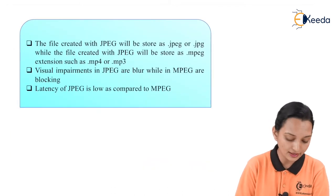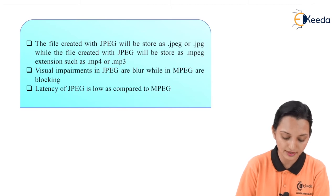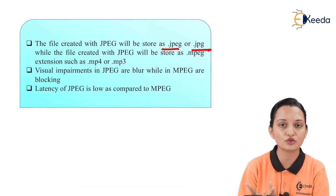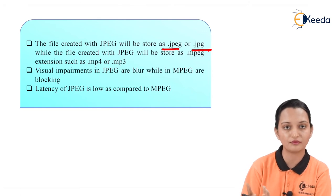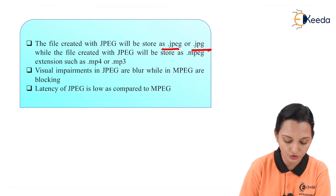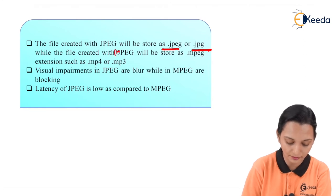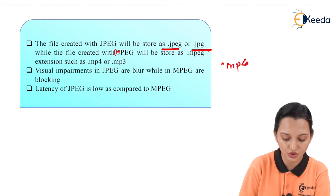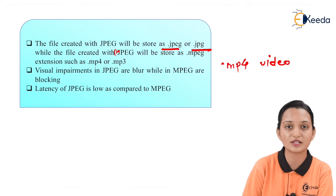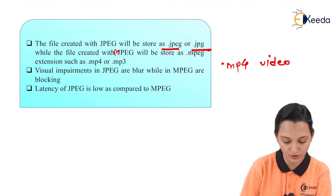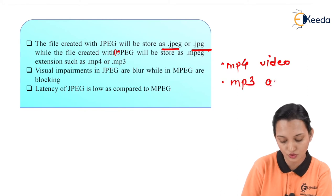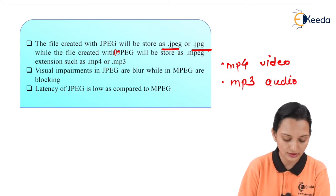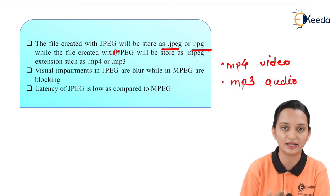Files created with JPEG are stored with a .jpg or .jpeg extension — these are the formats used to store pictures and images captured via a camera. Files created with MPEG are stored with extensions such as .mp4 or .mp3. The .mp4 extension is used to store video files, while .mp3 is the file extension used to store audio files.